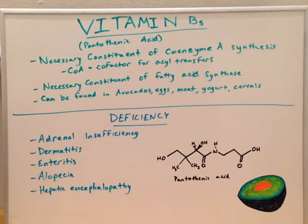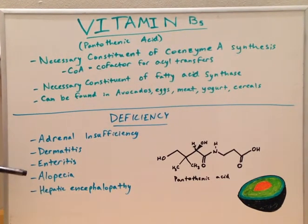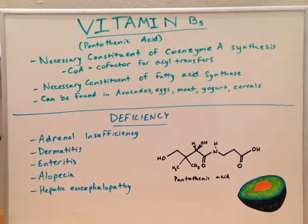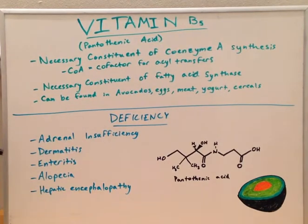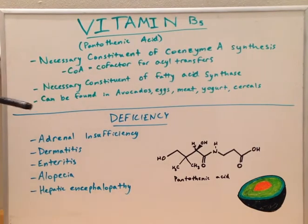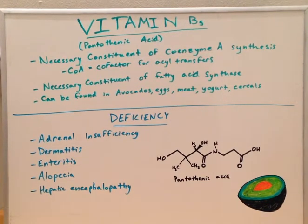A deficiency in vitamin B5 can lead to adrenal insufficiencies, dermatitis, enteritis, alopecia, and hepatic encephalopathy. The reason there is such a wide range of pathologies associated with the deficiency of vitamin B5 is because the cofactors and the fatty acid synthase are necessary in a wide variety of metabolism reactions. So all of the pathologies associated are going to be spread throughout the entire body.